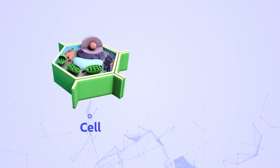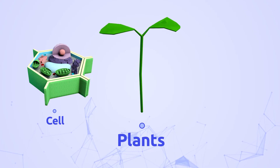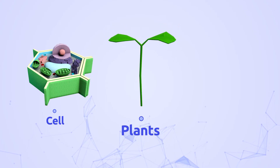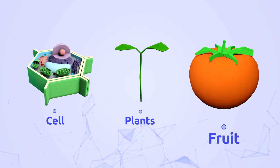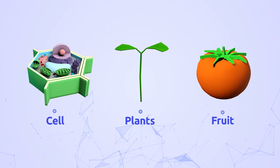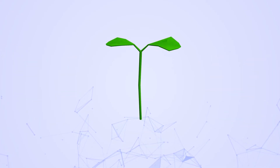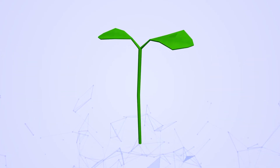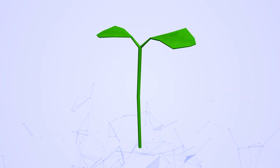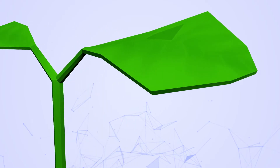Trees, flowers, vegetables, or fruit are made up of plant cells, which are in charge of the growth cycle. More specifically, vegetables make their own food through photosynthesis.